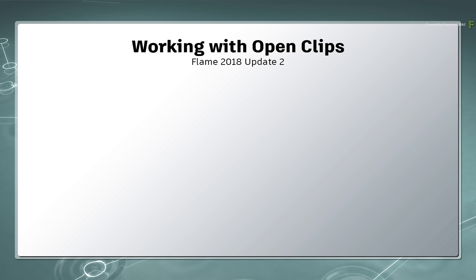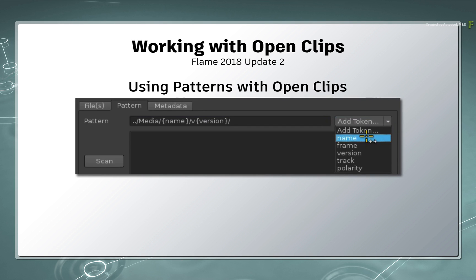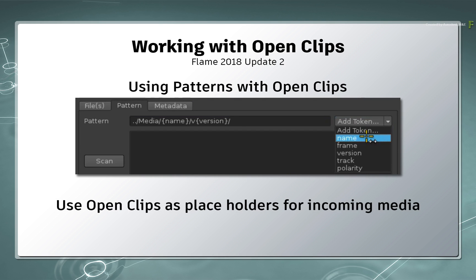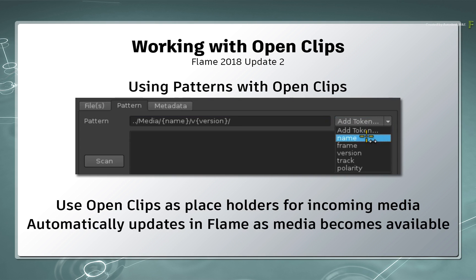And thirdly, another enhancement is to use strings and pattern recognition within OpenClips. This is slightly more advanced than just selecting clips, but it allows you to use OpenClips as placeholders. As soon as media or a new version becomes available, it automatically becomes available in Flame — quite an amazing versioning feature and something worth checking out.